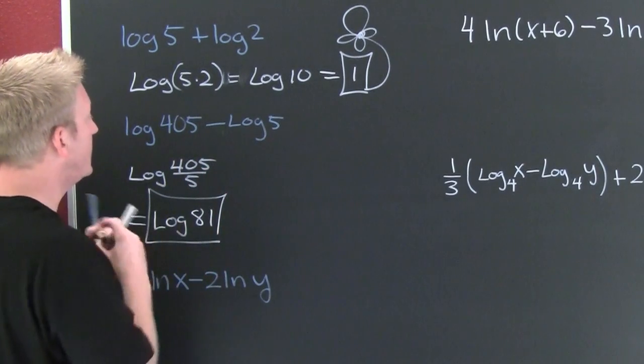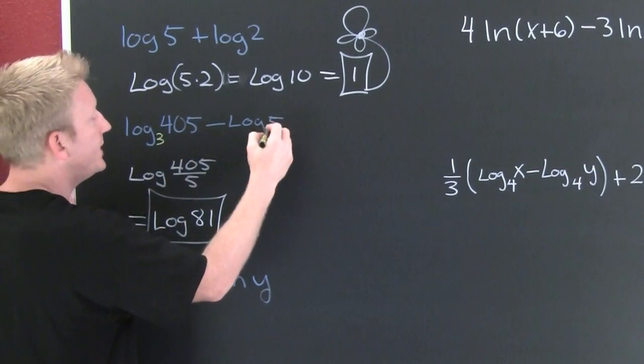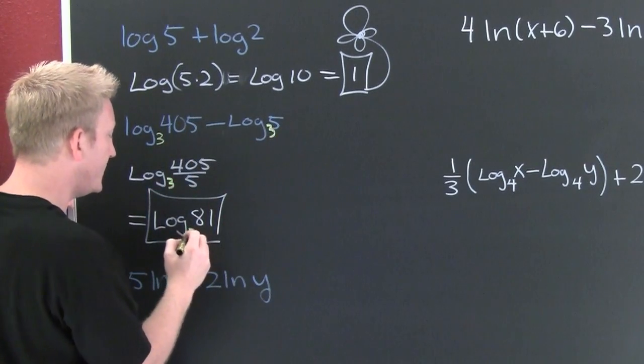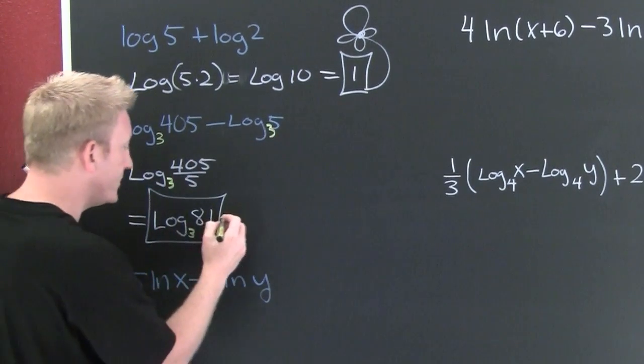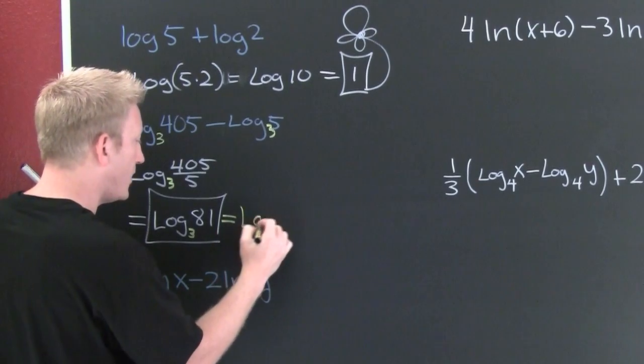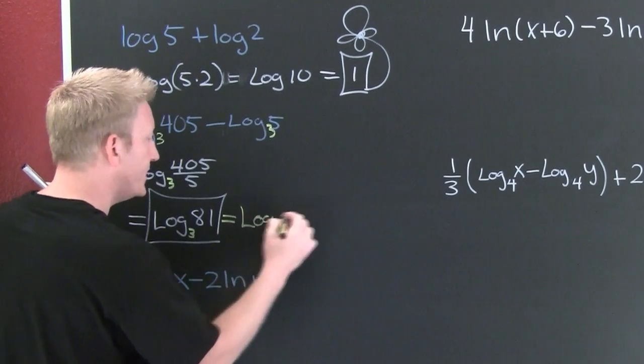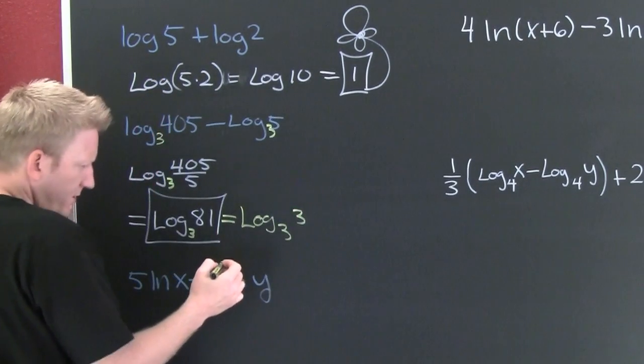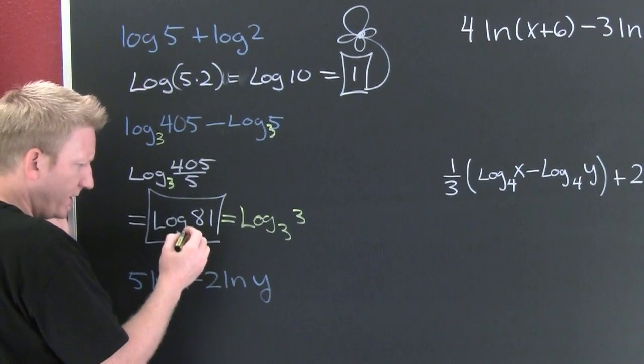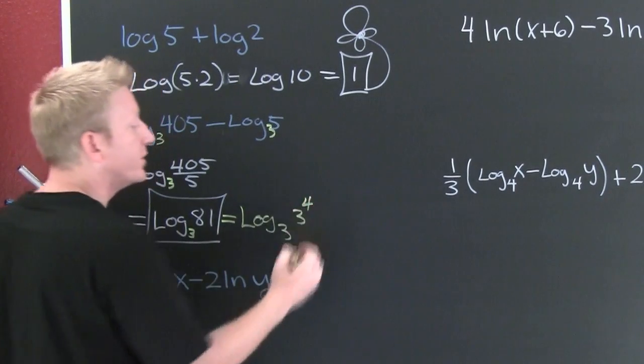What if this had been log base three? Three. Three. Three. I can go further. Then this would be log base three of three to the, wait, wait, wait, wait, wait, wait, wait, four.